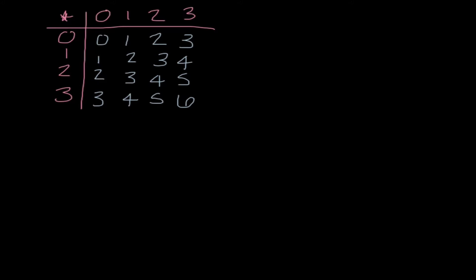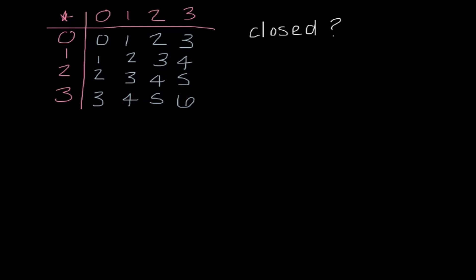Next I want to take a look at some Martian math. I went ahead and drew a chart — remember on our test, charts like this will be given already. There are really four different questions that will be asked. The first is: is this closed? Closure means that whenever I do an operation, I'm always going to get one of these elements back as my answer — the output is a member of the original set. Looking at this problem, we have outputs that are not members of our original set, so we would say no, it is not closed.